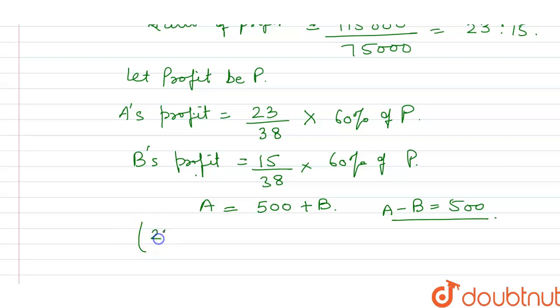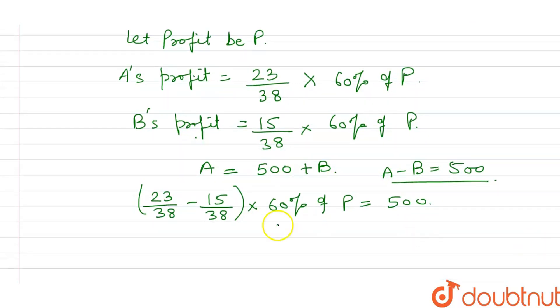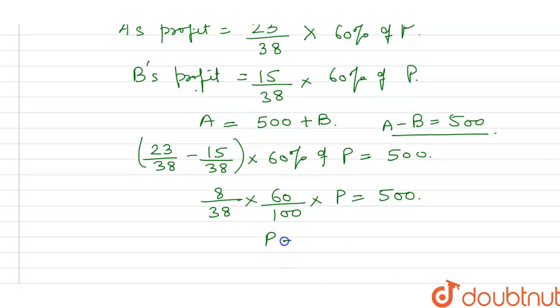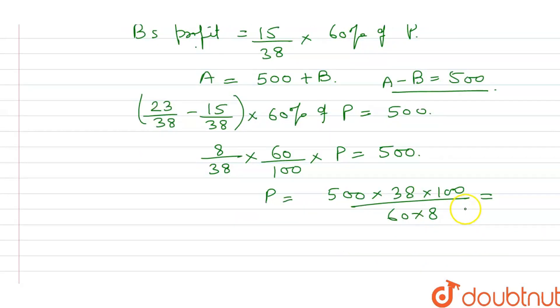It will be 23 by 38 minus 15 by 38 into 60 percent of P equals 500. This becomes 8 by 38 into 60 by 100 into P equals 500. So P will be 500 into 38 into 100 upon 60 into 8. When we solve this, the value comes out to be 39,583.34 rupees. This is the total profit. Thank you.